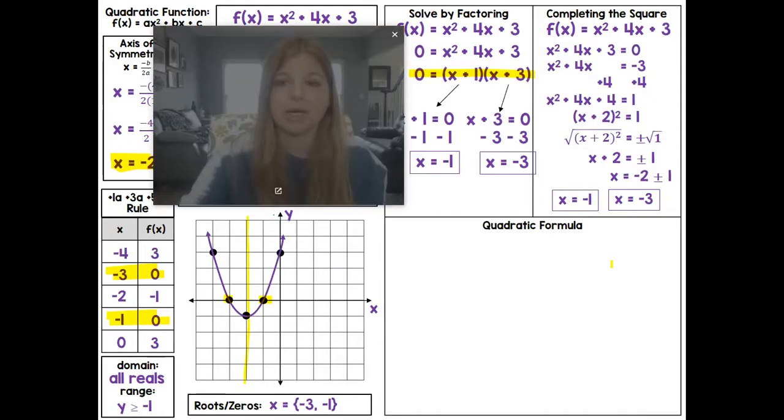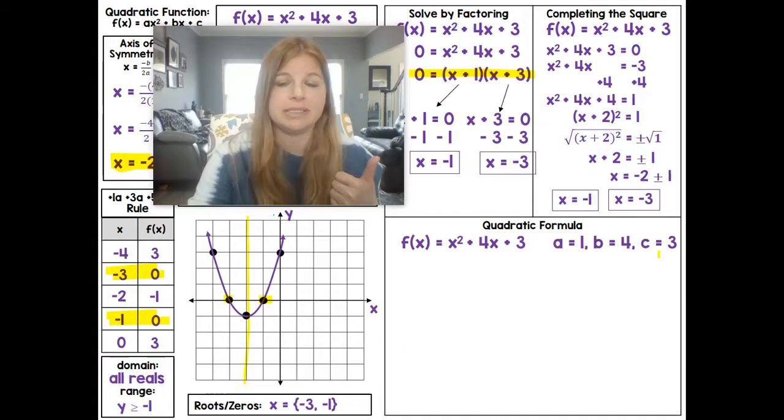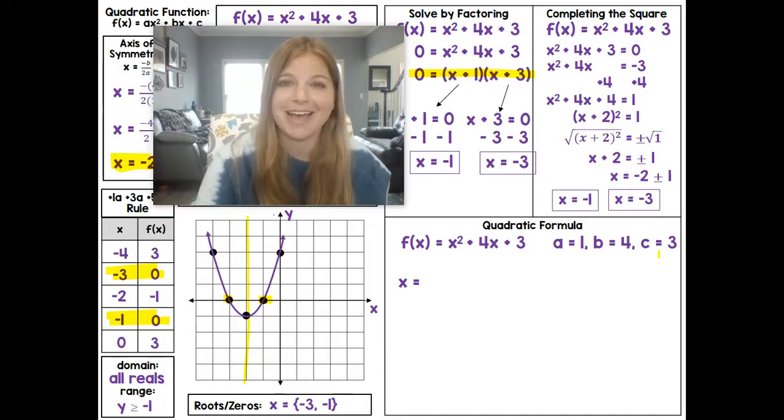Last one, quadratic formula. So we need to make sure we know in our quadratic formula still our a, b, c values. So a is 1, b is 4, c is 3. If x = (-b ± √(b² - 4ac)) / 2a, so x = (-4 ± √(b²)) - now b is 4, so it's 4² - 4ac, so 4 × 1 × 3, all over 2a, which is 2 × 1.